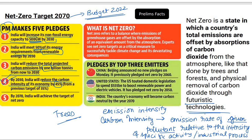By 2070, India will achieve the target of net zero — that balance state where emissions are offset by futuristic technologies. That is the net zero state and the final of the five pledges.